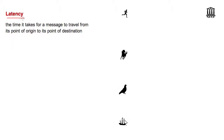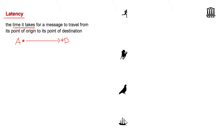Latency is a measure of time delay in a system. Because there are many different types of systems and time delays, it is always very important to have a precise definition of what we mean by latency. We will define message latency as the time or delay for a message to travel from its point of origin to destination. We have two points, A and B, and we are sending a message from A to B. The latency of the system is the time it takes for the message to travel from point A to point B.